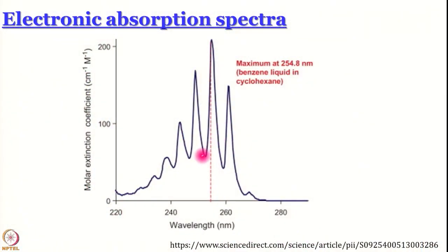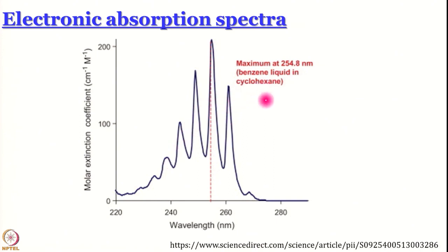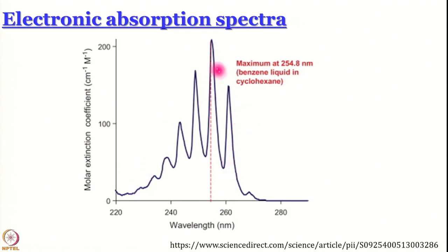This here is an absorption spectrum of benzene dissolved in cyclohexane — an aromatic compound dissolved in a non-aromatic organic solvent. Since it is benzene, you might understand that the transitions you see are π→π* transitions, because benzene does not have a nitrogen atom or oxygen atom or any such heteroatom.